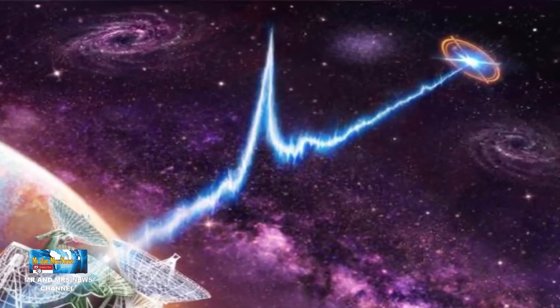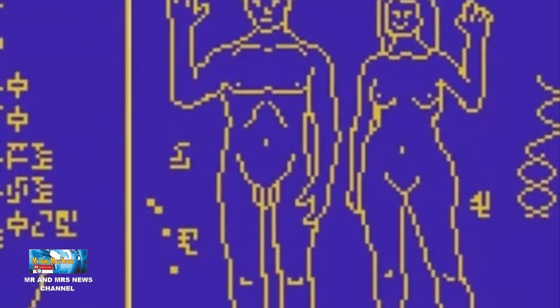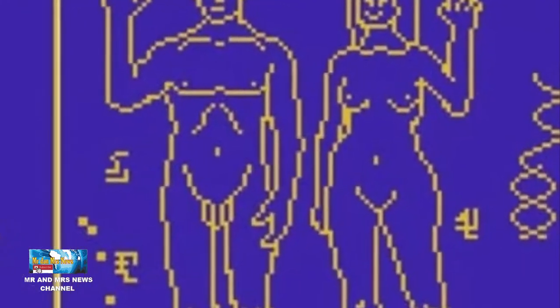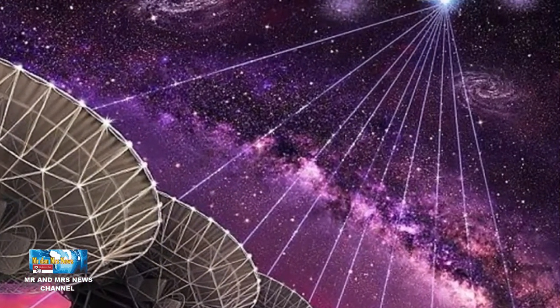Pesan binar berkode ke alien dari NASA mencakup sejumlah komponen seperti matematika dan fisika dasar, komposisi biokimia kehidupan di bumi, penggambaran digital, dan posisi tata surya.